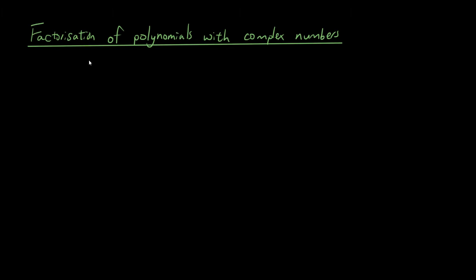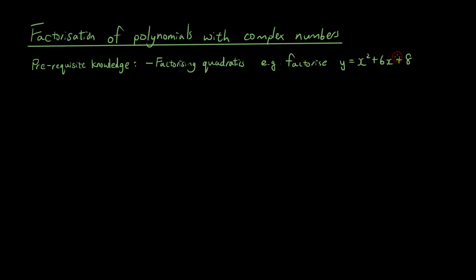Before we go through with this, I just want to make sure that you guys have some prerequisite knowledge. Prerequisite number 1 is factorizing quadratics. For example, you should be able to factorize y equals x squared plus 6x plus 8. The answer to that is y equals x plus 2 times x plus 4, where each of these brackets are the factors of this polynomial. If you don't understand how to do that, please go back and have a look at my algebra tutorials.